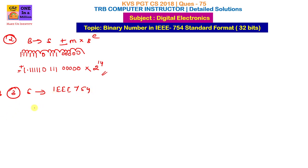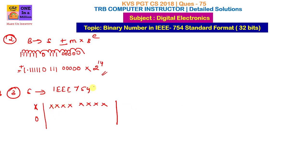The first bit is the sign bit. For a positive number, the sign bit is 0; for a negative number, it is 1. The next 8 bits represent the exponent field in the IEEE 754 single precision format.